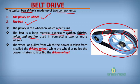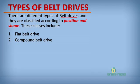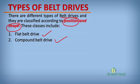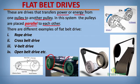The wheel or pulley where power is taken to is what we refer to as the driven wheel. There are different types of belt drive, classified according to position and shape: flat belt drive and compound belt drive. In a flat belt drive, power or energy is transferred from one pulley to another, and the pulleys are placed parallel to each other, irrespective of their sizes.